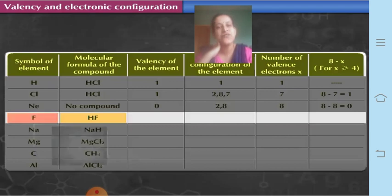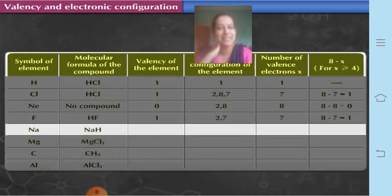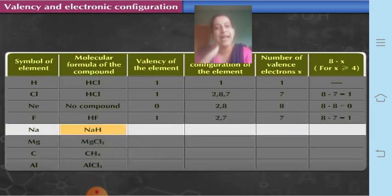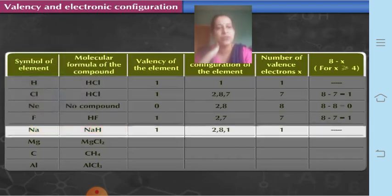Fluorine in hydrogen fluoride has valency 1. Its electronic configuration is 2, 7, and the number of valence electrons is 7. So 8 minus 7 equals 1 — its valency is 1. Sodium in sodium hydride has valency 1. Its electronic configuration is 2, 8, 1, and the number of valence electrons is 1, so its valency is also 1.